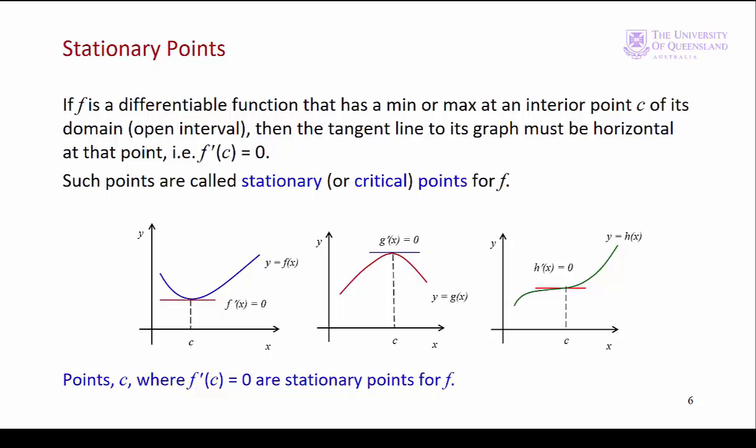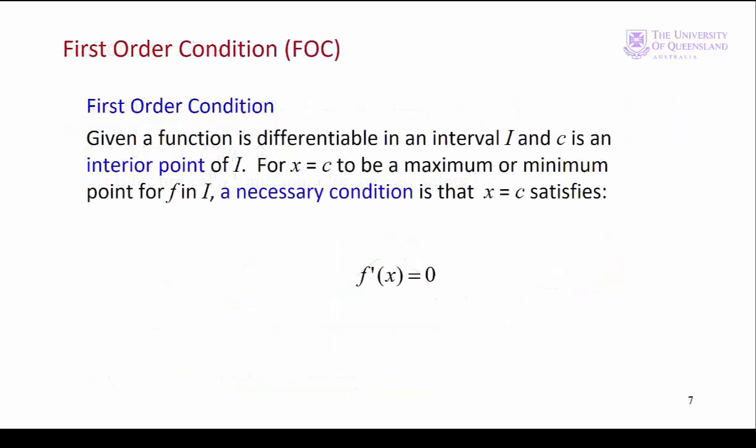Going back to maxima or minima — if extreme points are stationary points we have a way of finding them. We take the first derivative of the function and set it equal to zero. Solving for x gives us the stationary points. This is known as the first order condition: to find a stationary point on a differentiable function we take the first derivative and set it equal to zero.